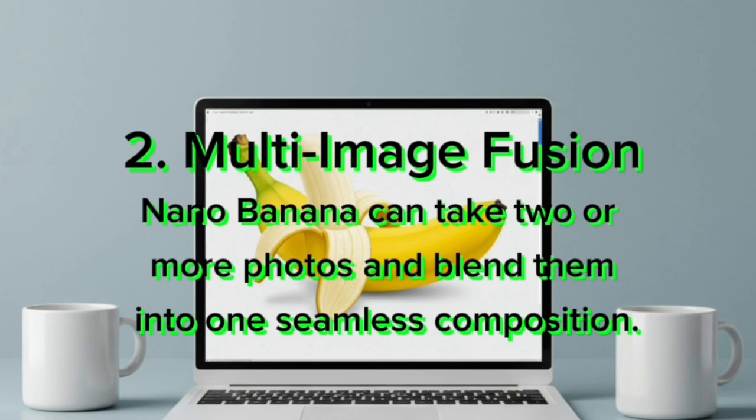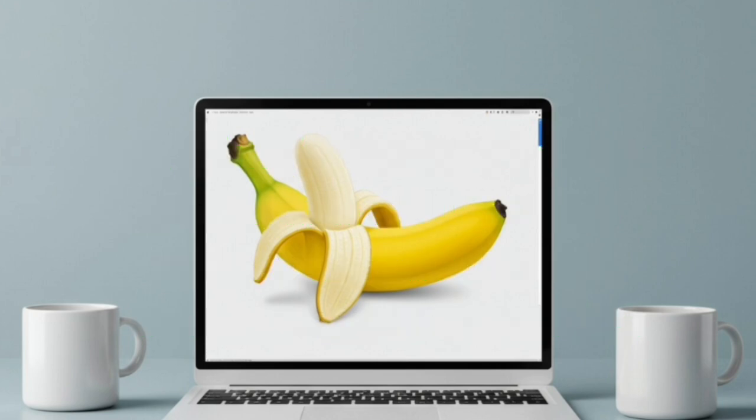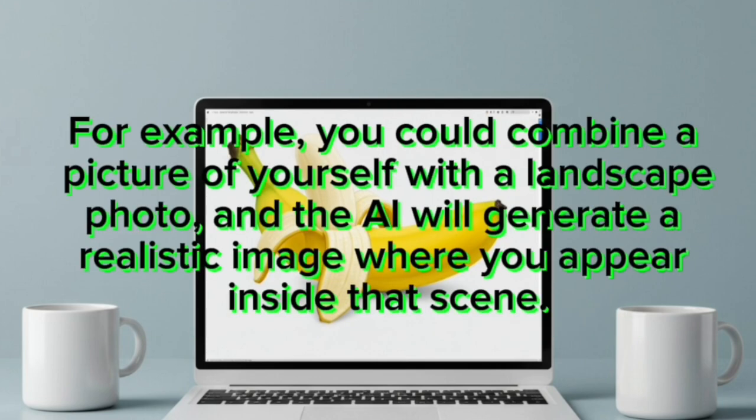Second, Multi-image Fusion: Nano-Banana can take two or more photos and blend them into one seamless composition. For example, you could combine a picture of yourself with a landscape photo, and the AI will generate a realistic image where you appear inside that scene.